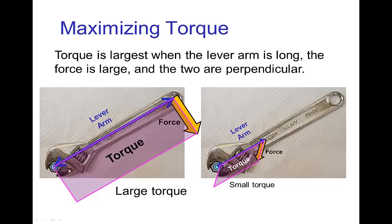If we want to apply a large torque when using a wrench to turn a nut, we apply the force at the end of the wrench so the lever arm is as long as possible, and apply that force perpendicular to the lever arm so the resulting rectangle is as large as possible. A very inefficient way would be to apply the force near the other end so the lever arm is short, and angle the force almost in the same direction as the lever arm — giving a shallow angle and a small trapezoid area, meaning a small torque.